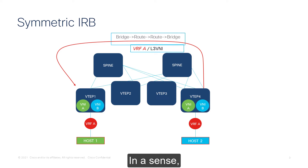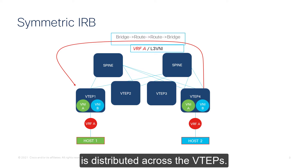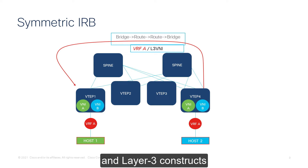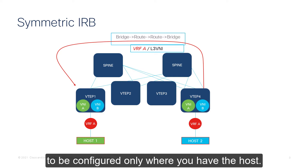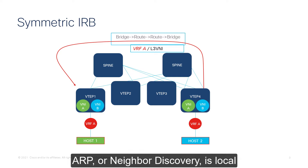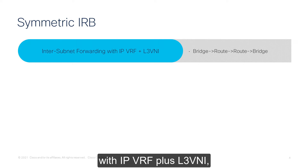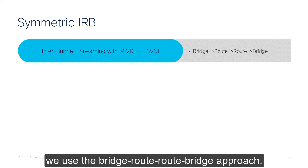In essence, all packet forwarding for this inter-subnet traffic is distributed across the VTEPs. This model allows layer 2 and layer 3 constructs to be configured only where you have the host. As a result, ARP and neighbor discovery is local to where the endpoint is attached. To recap, for inter-subnet traffic with IP-VRF plus L3VNI, we use the bridge-route-bridge approach.